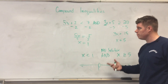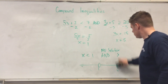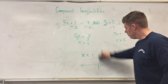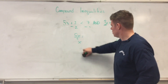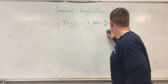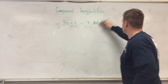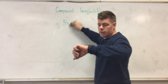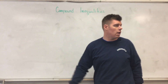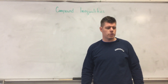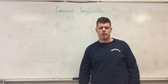So that's the key difference between 'and' and 'or' in compound inequalities. 'Or' just requires graphing both solutions separately, while 'and' must satisfy both. We'll cover another 'and' example in a separate video.